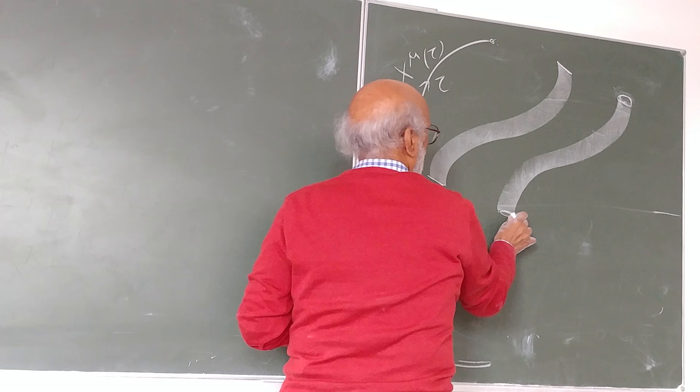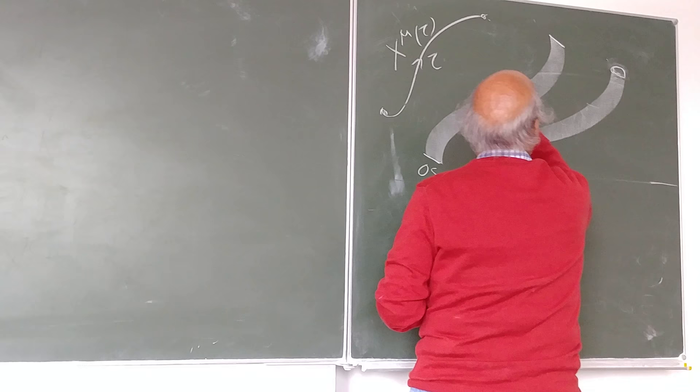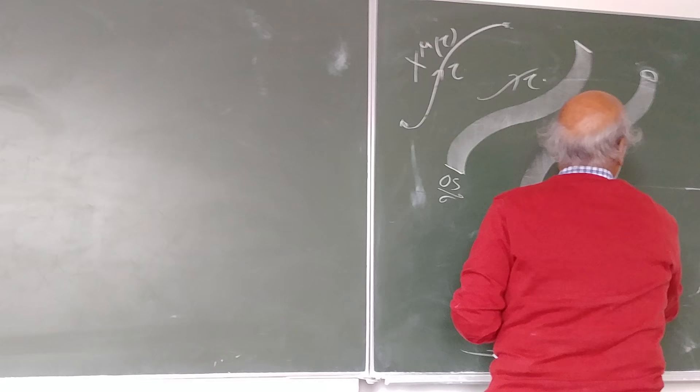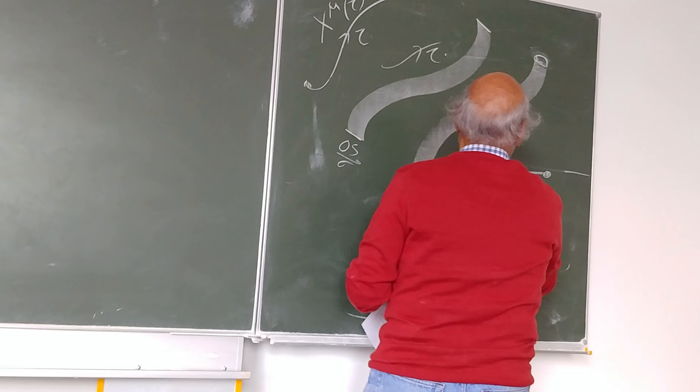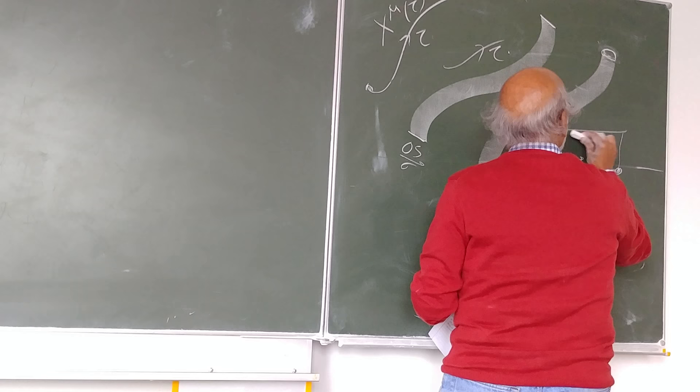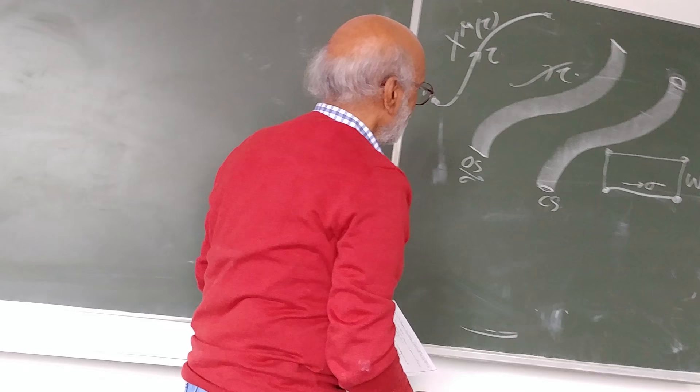Here is an open string, here is a closed string. As it propagates along tau, this is sigma here. You have sigma the length, and as it propagates it describes a worldsheet, right? Here for a closed string.